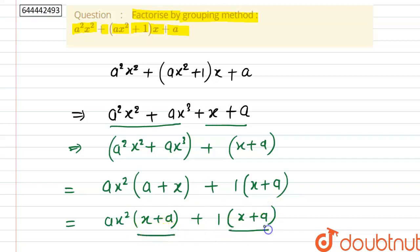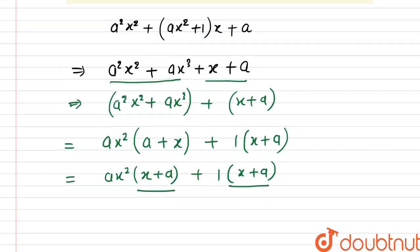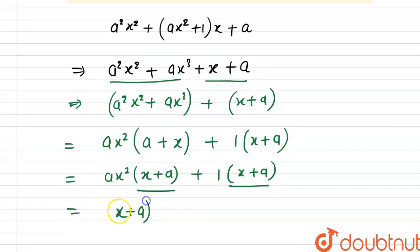From both groups, we can take (x + a) as common, then this equals (x + a)(ax² + 1).